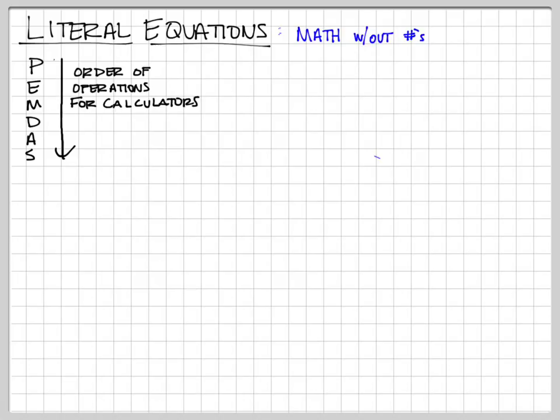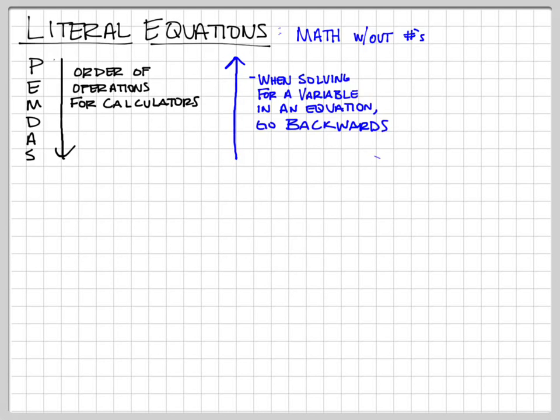When you are solving an equation, you do it in the opposite direction — we go backwards when solving for a variable. You are going to do addition or subtraction first and work your way towards more complicated things. That's how you deal with solving literal equations.